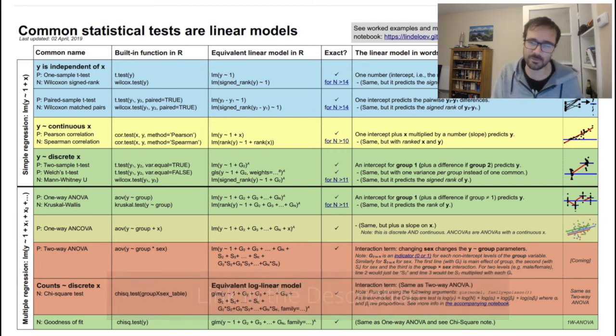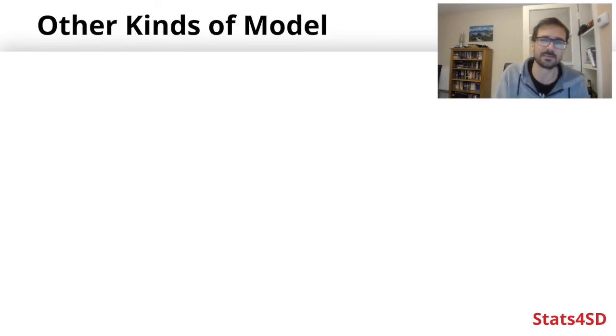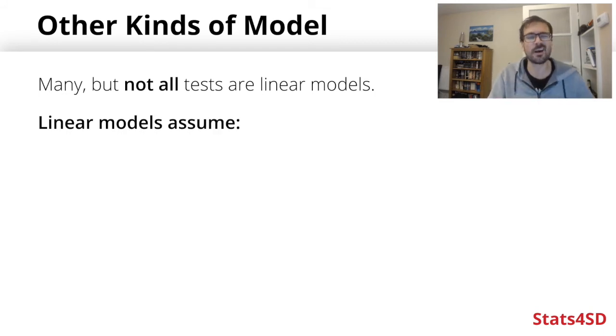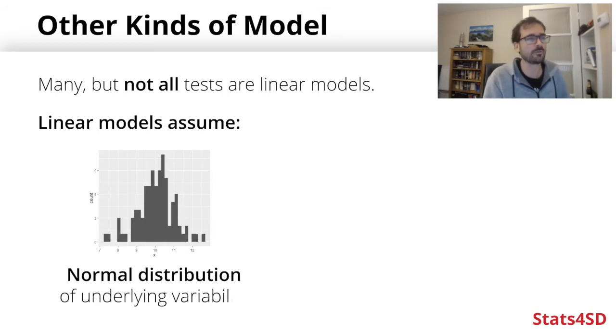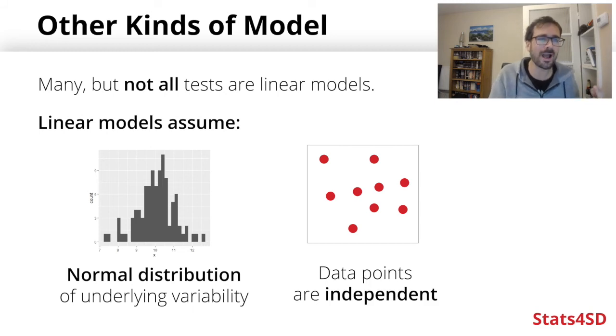And it's not just true of these models in this particular family. It's actually not true at all to say that all statistical tests are linear models. There's maybe two main underlying commonalities between these linear models where we are assuming there is an underlying distribution of normality in our residuals. And we're also assuming that all of our data points are independent. But what happens when we don't satisfy those two criteria?